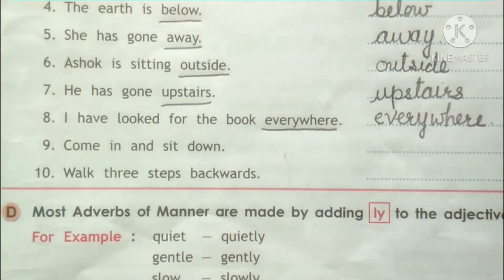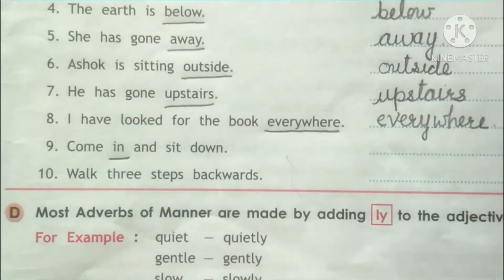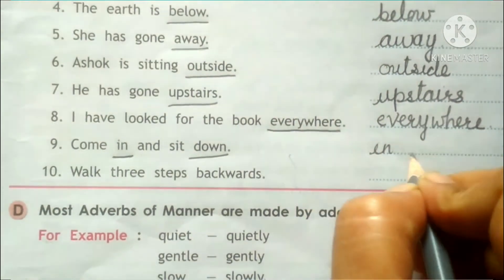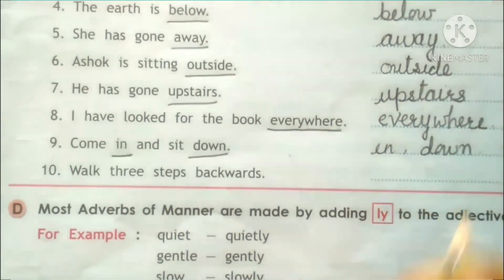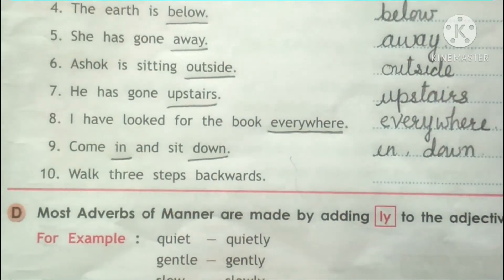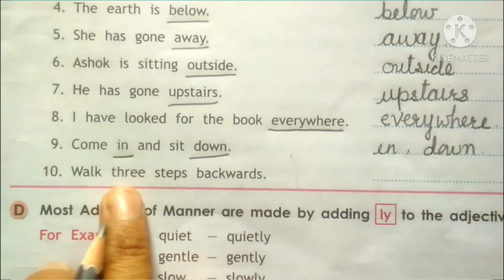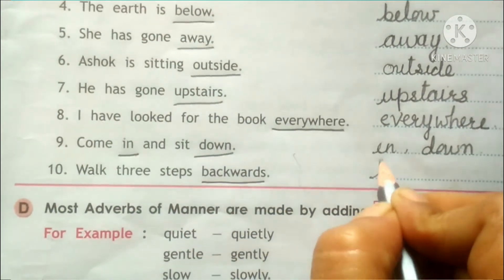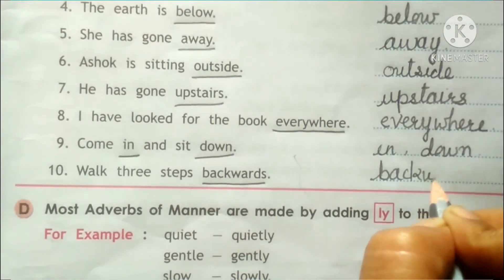Number 9: Come in and sit down — andar aao aur baitho. So in and down — both are adverbs of place. Number 10: Walk three steps backwards — teen steps backwards chalo. So backwards shows pe chhe ki tarap — backwards.